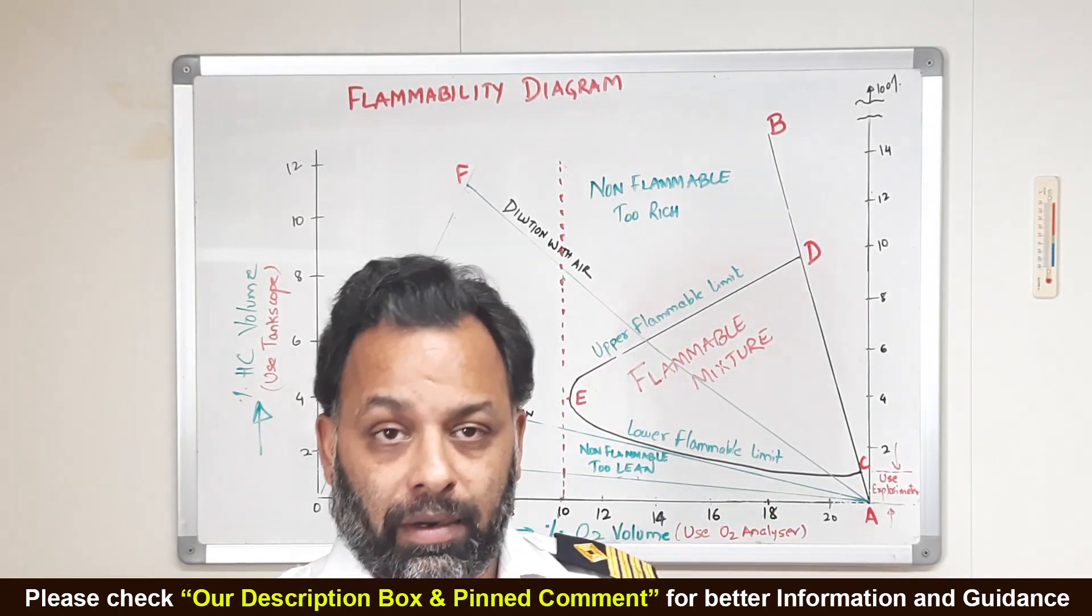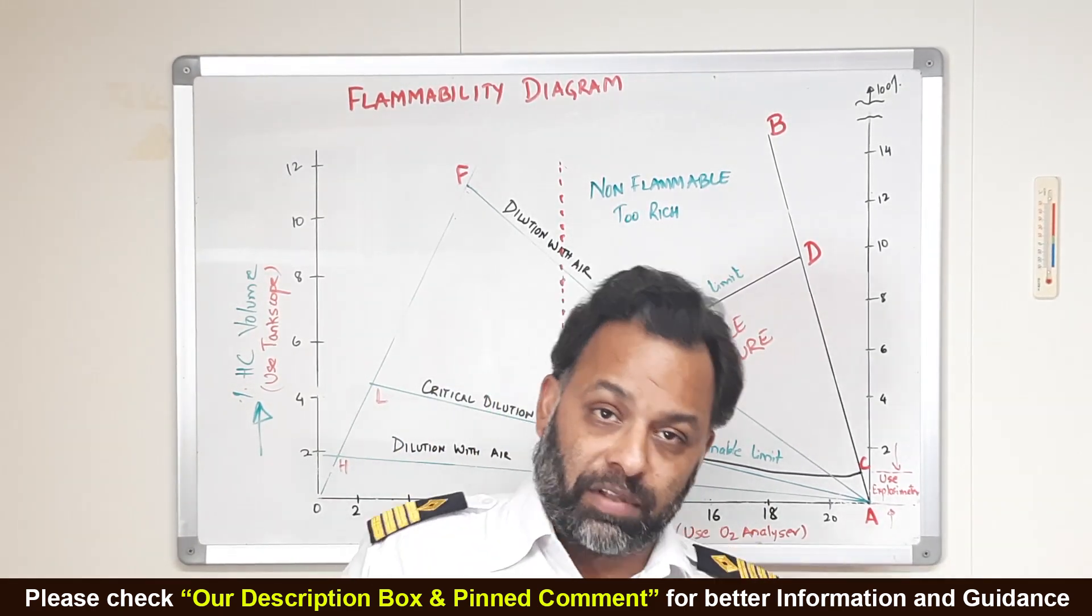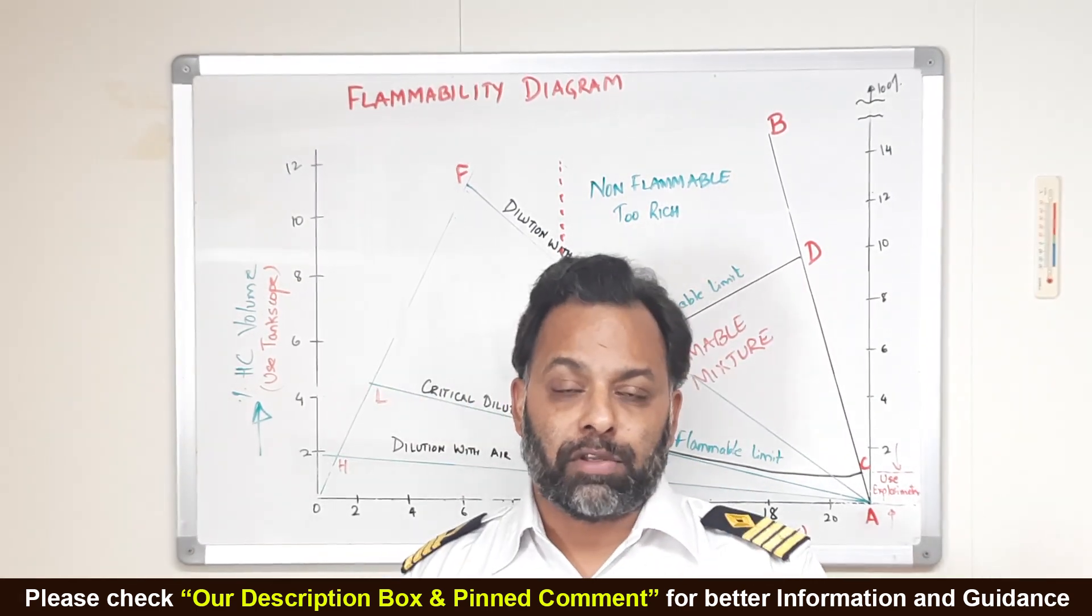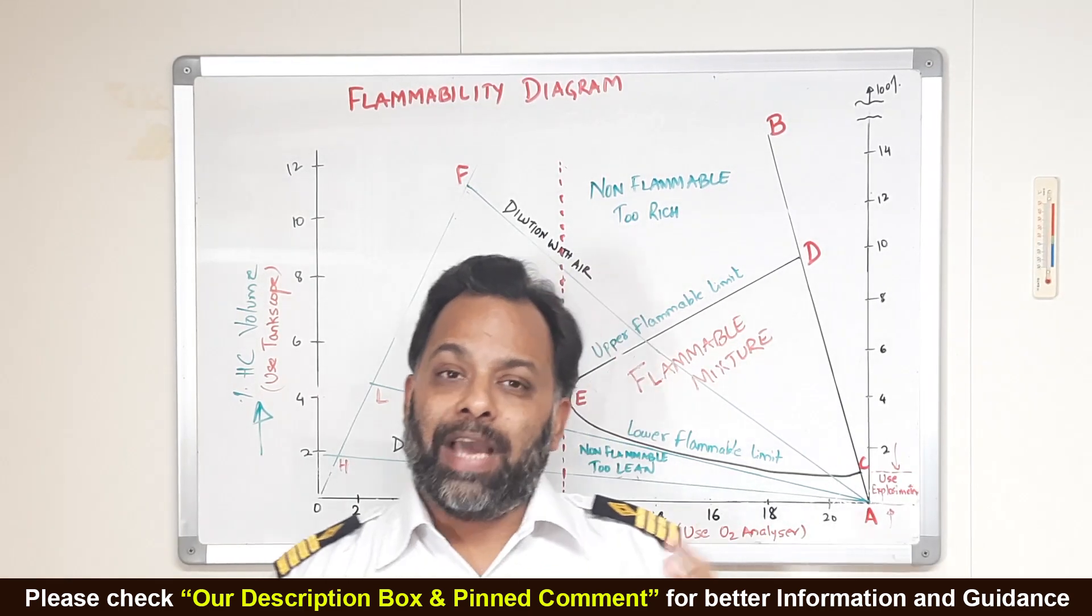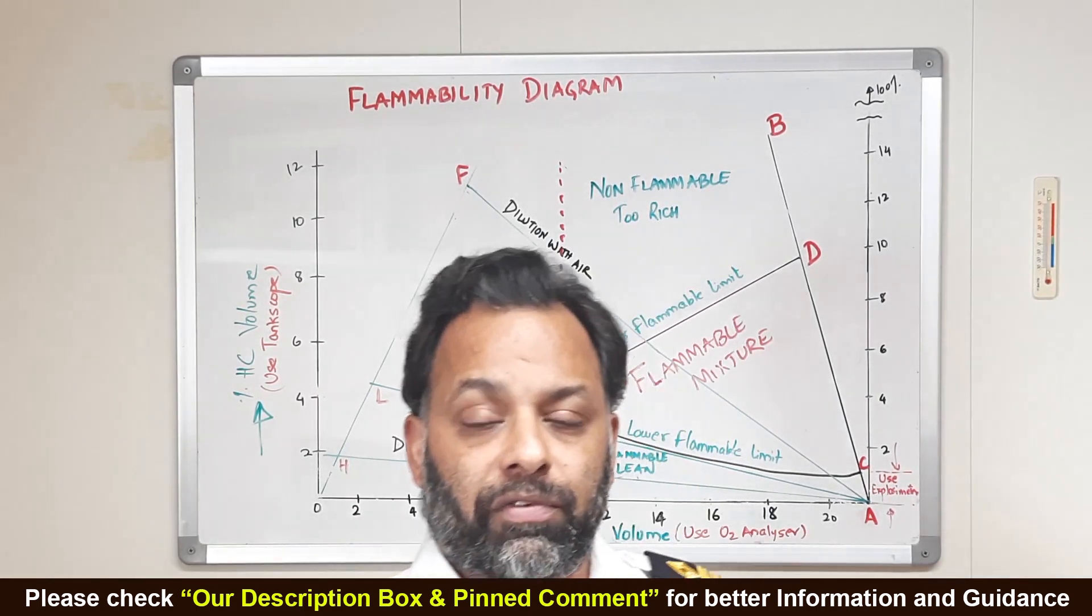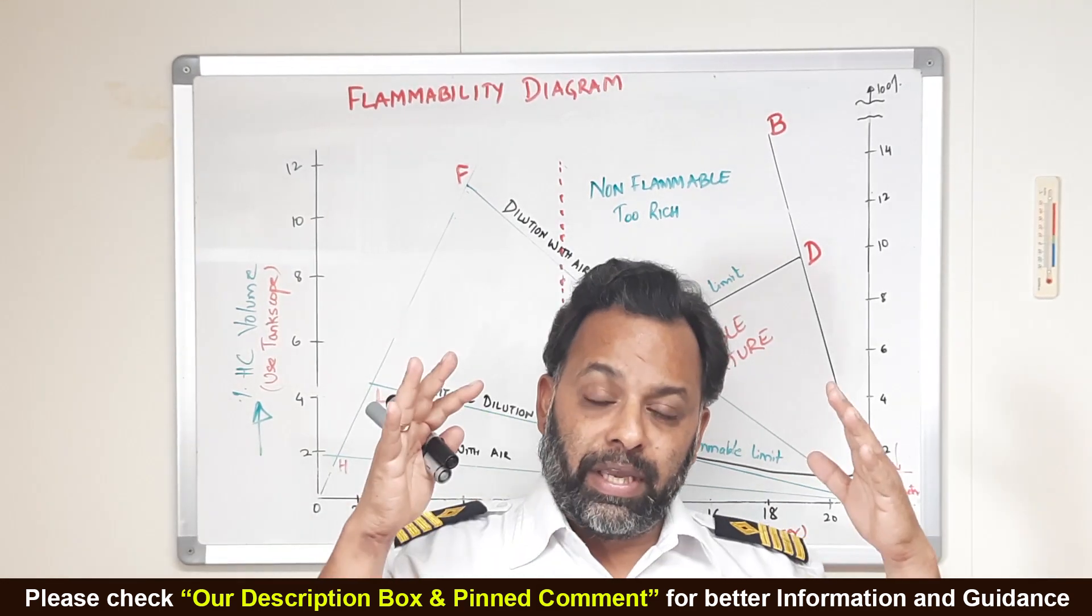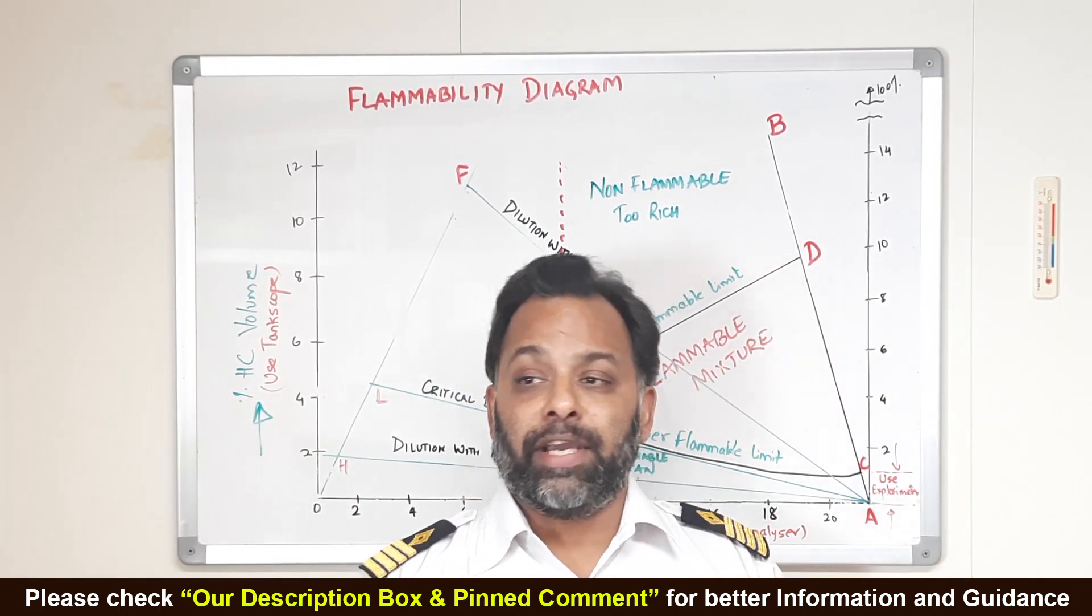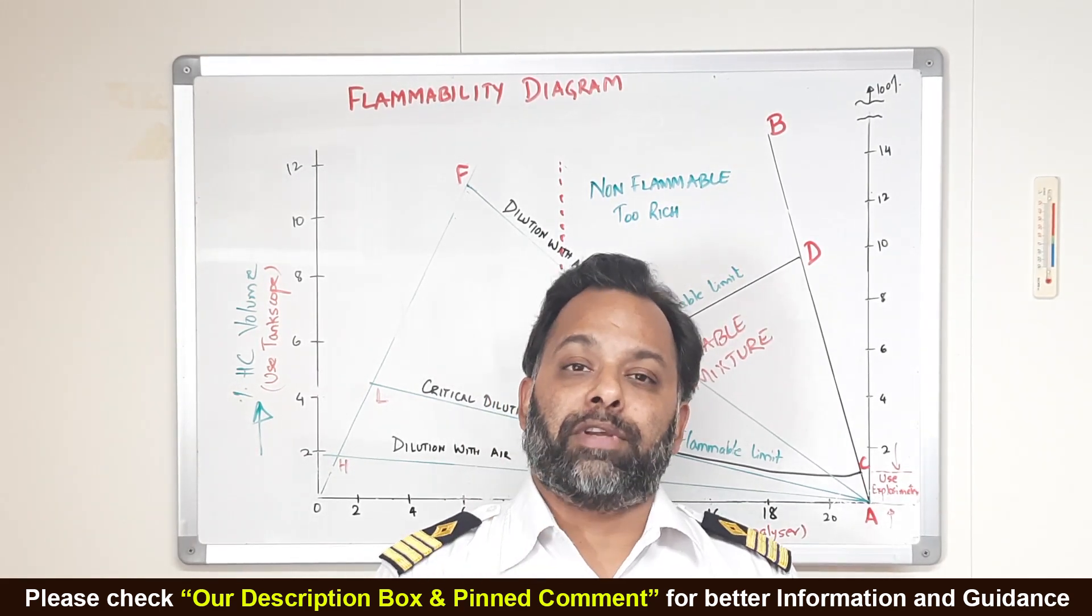Third thing is air. We can definitely take away air from the system, from the tanks by introducing something which is called inert gas. We have inert gas generators, inert gas systems through which we put that inert gas into the atmosphere, which contains less than 5% of oxygen. And hence we take away one element of this fire triangle.